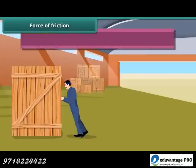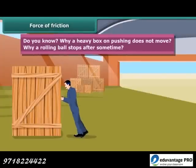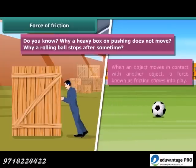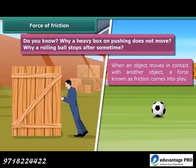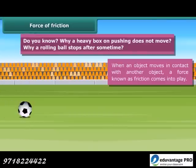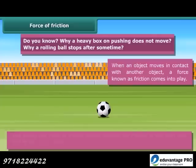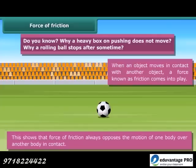Force of friction: Why does a heavy box not move when pushed? Why does a rolling ball stop after some time? When an object moves in contact with another object, a force known as friction comes into play. The force of friction always acts on all objects and its direction is always opposite to the direction of motion. The moving object gradually slows down and ultimately stops due to friction. This shows that force of friction always opposes the motion of one body over another body in contact.